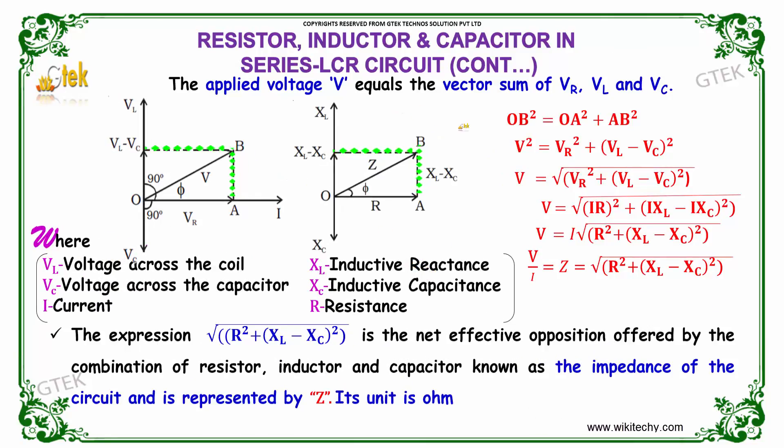The applied voltage V equals the vector sum of VR, VL and VC. So OB square is equal to OA square and AB square, which indicates V squared equals VR squared plus VL minus VC whole squared.